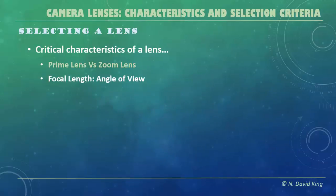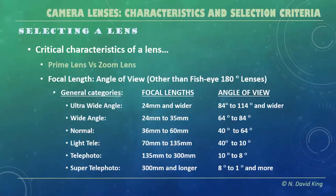Another characteristic is the angle of view based on focal length, which is what lets us talk about cropping. There are some general categories that have been around for a long time: ultra-wide angles, wide, normal, light teles, teles, and super teles. These are the generally accepted focal length ranges. Different texts may have a slightly different take, but roughly this is where most of them fall.